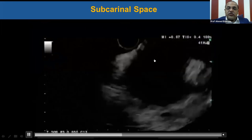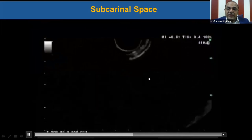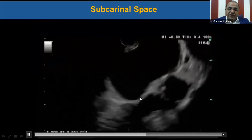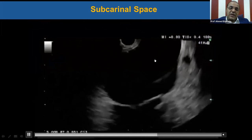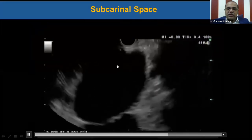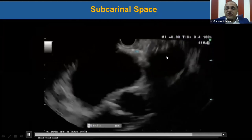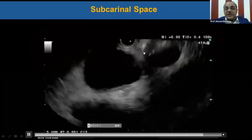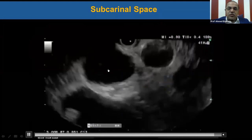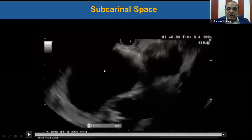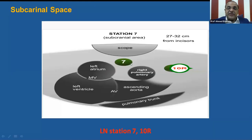We withdraw the scope more and more. This is the left atrium, mitral valve, left ventricle, and the root of the aorta. By slight clockwise and anti-clockwise manipulation, the left atrium comes to the left of the screen. This is the right pulmonary artery, which is a branch from the pulmonary trunk, and the area in between is the subcarinal space — lymph node station 7 — which is the most important station for EOS examination in the mediastinum. This figure shows again station 7 subcarinal area between the left atrium and right pulmonary artery, with the left atrium, left ventricle, and mitral valve in between. This is the root of the aorta, the pulmonary trunk giving the right pulmonary artery branch, and this is station 7.